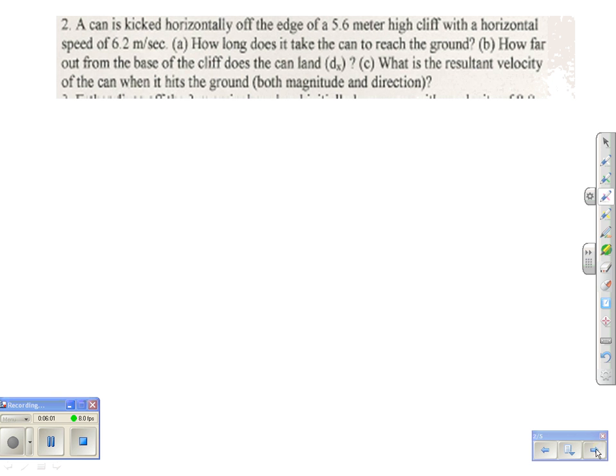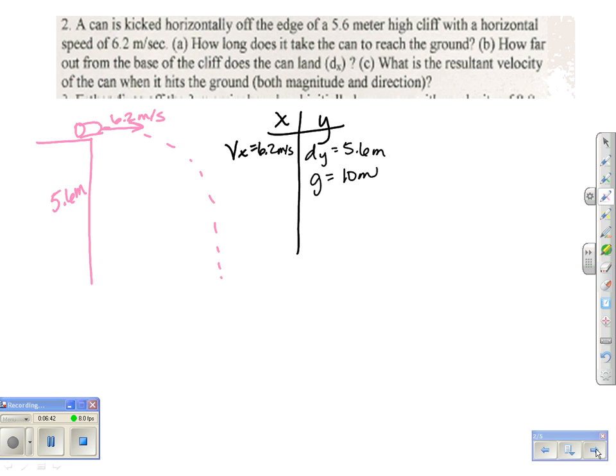Moving on. Number two. A can is kicked horizontally off the edge of a 5.6 meter high cliff. And here's my can up here. It's going to get kicked off. We are told that it's been given a horizontal speed of 6.2 meters per second. So we first want to do our xy chart. So my vx equals 6.2 meters per second, and my dy equals 5.6 meters. Gravity is going to be involved, so it's 10 meters per second squared. We're going downwards, so I know my v0 is also 0 meters per second. And now I can go ahead and try to start solving.